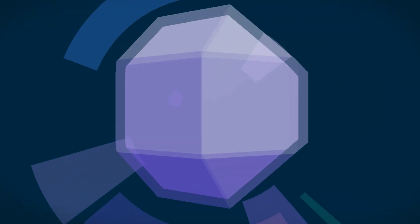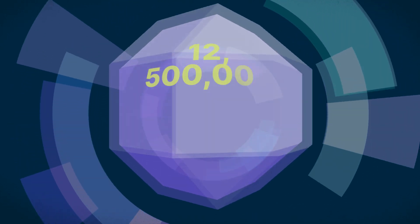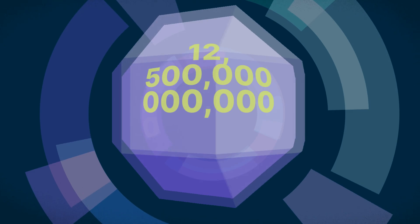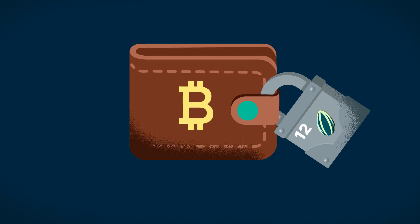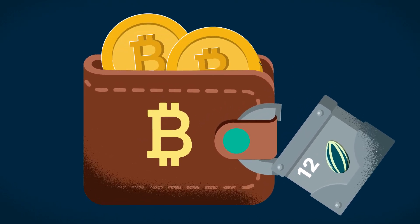This gives us an approximate 1 in 12.5 octillion or 1 in 1,250 trillion billion chance of finding a combination that controls a Bitcoin wallet with funds.